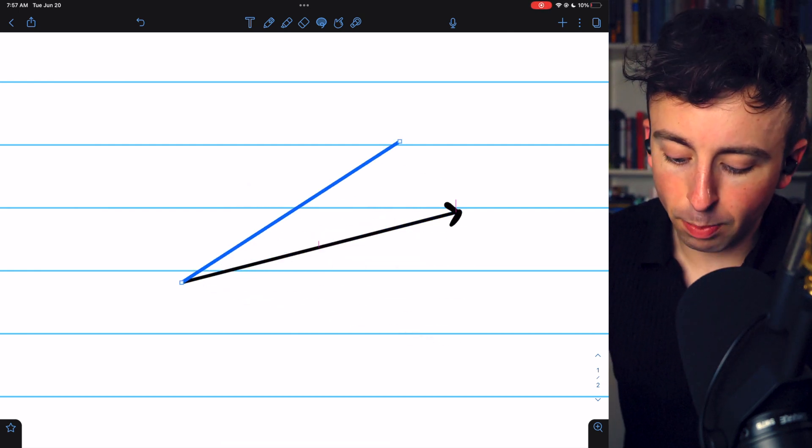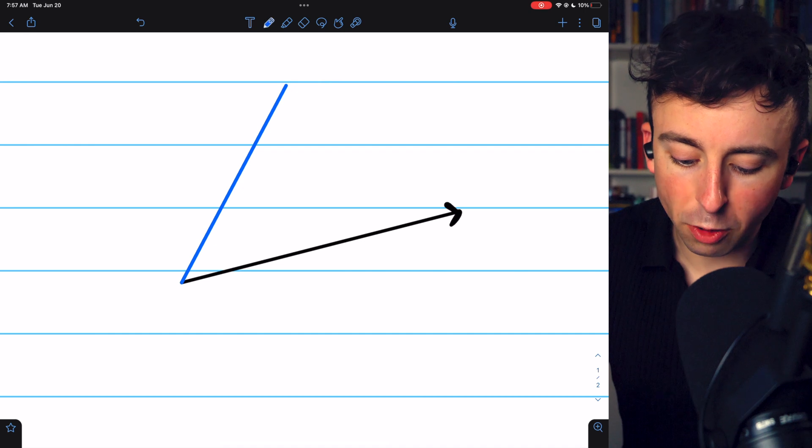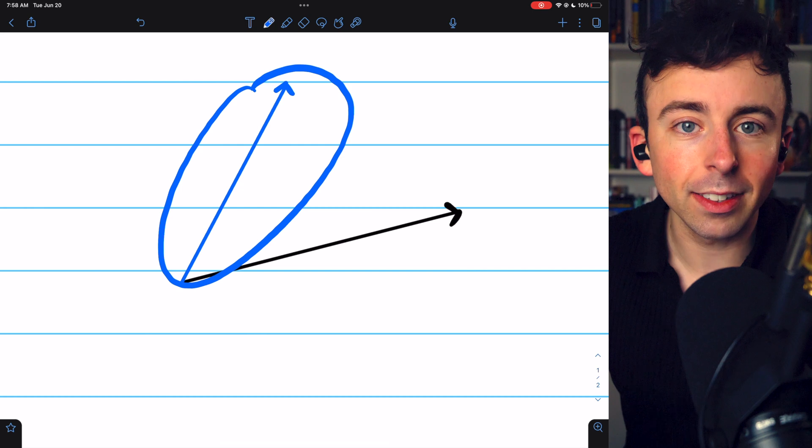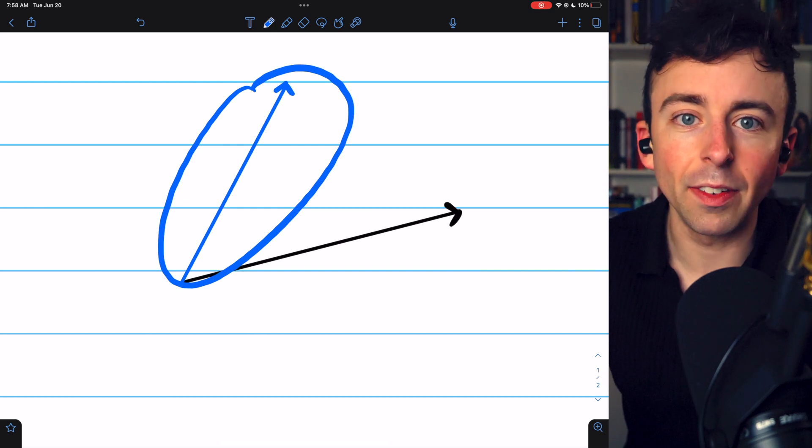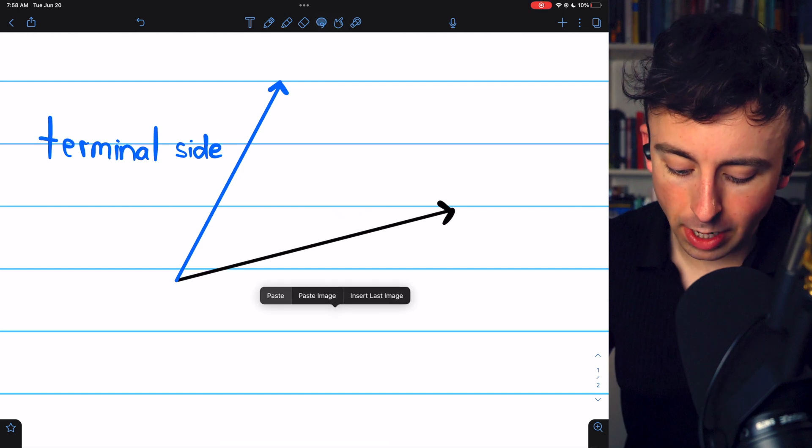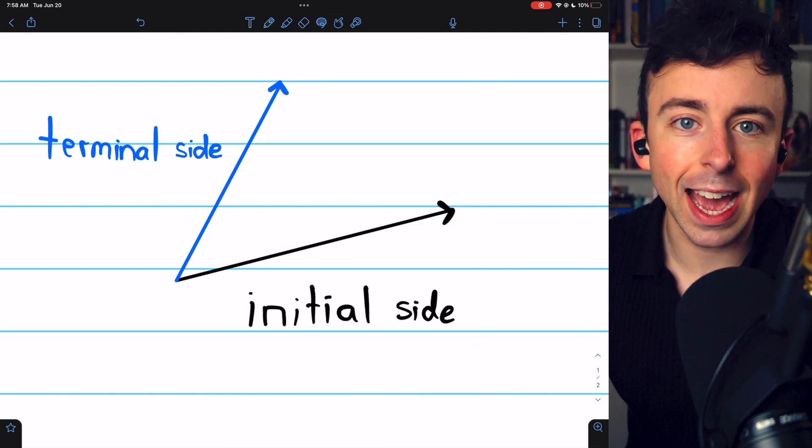Let's say we rotate this blue side in a counterclockwise direction, which is considered positive. This side that's not fixed is called the terminal side of the angle. On the other hand, the fixed side that did not rotate is called the initial side of the angle.